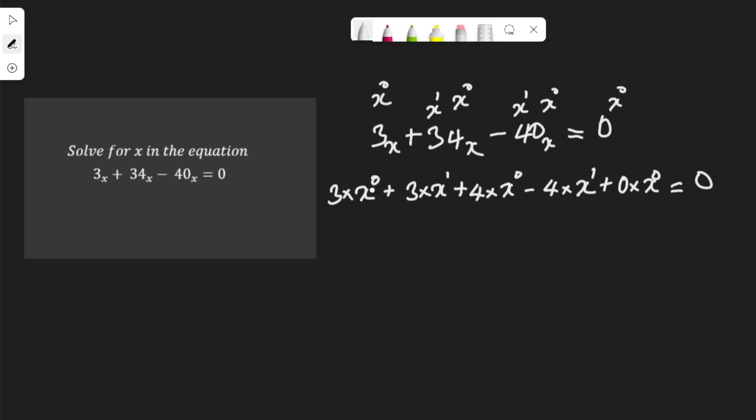We know that x to power 0, any number x to power 0 is 1. So it's 3 times 1 is 3, plus x to power 1 is x multiplied by 3, which is 3x. Again, x to power 0, 1 multiplied by 4 is 4, minus x to power 1 multiplied by 4 is 4x. And x to power 0, 1 multiplied by 0 is 0.